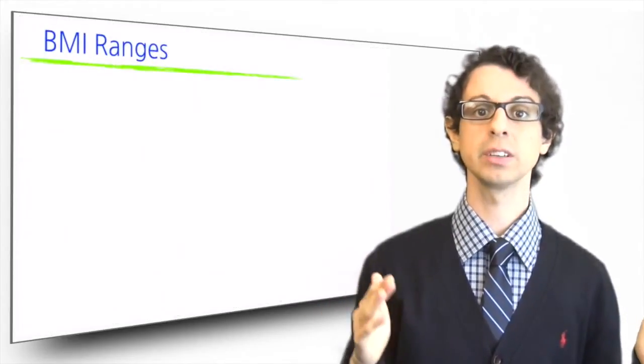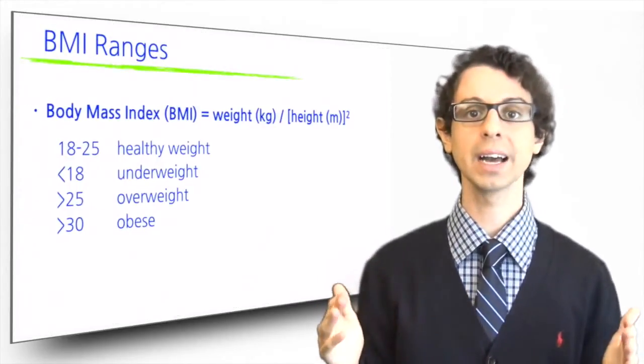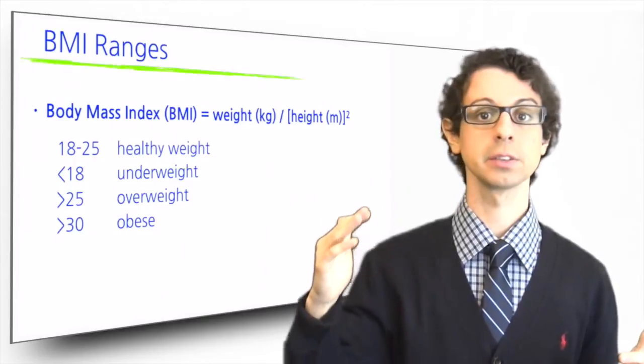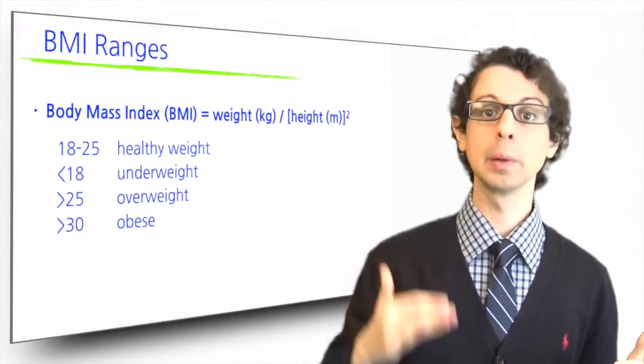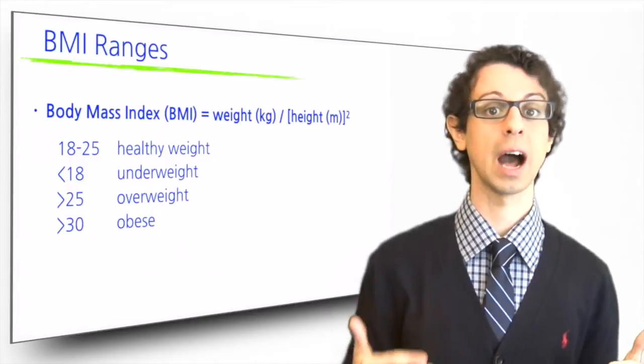The healthy weight range is a BMI between 18 and 25. Above 25 a person is considered overweight, above 30 obese. Below 18 the person is considered underweight.